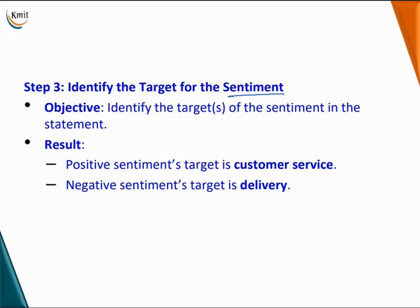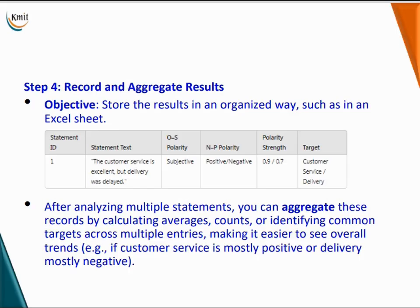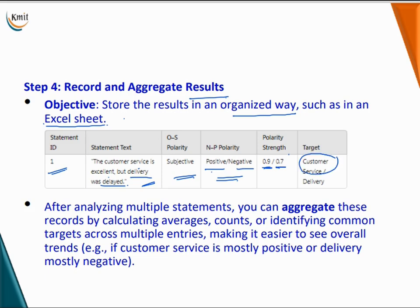Step 3 — identify the target for the sentiment. We identify the targets in the statement. The result: positive sentiment target is customer service; negative sentiment target is delivery. Step 4 — record and aggregate results. We store the results in an organized way, such as in an Excel sheet, with statement ID, the statement, the OS polarity, and the negative-positive polarity and its strength — for example, customer service is positive with polarity 0.9, and delivery was delayed is negative with a strength of 0.7. The targets are customer service and delivery.